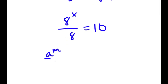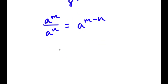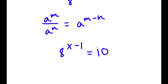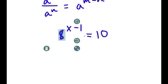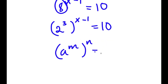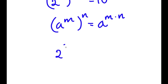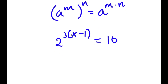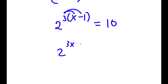If I have something in the form a to the power of m over a to the power of n, this equals a to the power of m minus n. So 8 to the power of x over 8 to the power of 1 equals 8 to the power of x minus 1, which equals 10. Now, 8 is the same thing as 2 to the power of 3. So now I have 2 to the power of 3 to the power of (x minus 1) equals 10. Using the rule a^m^n = a^(m times n), this becomes 2 to the power of 3(x minus 1) equals 10. Distributing the 3, I get 2 to the power of 3x minus 3 is equal to 10.